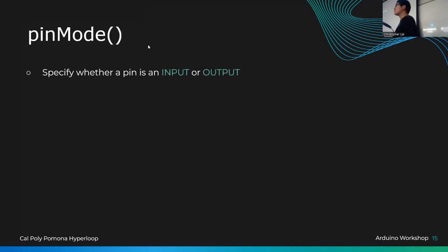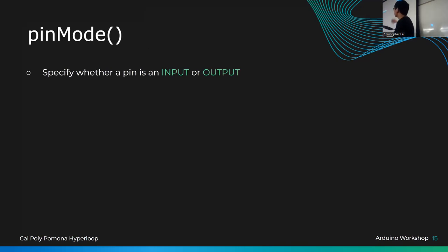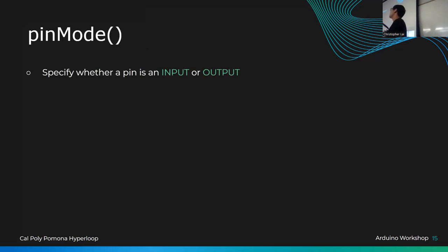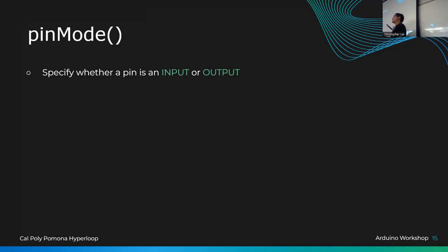`pinMode` is used in the setup function to specify whether a pin is an input or output. Arduino doesn't automatically know what you've plugged in, so you have to tell it. A light sensor would be an input, an LED or motor would be an output. Be careful about specifying this correctly — getting it wrong can potentially damage the board.